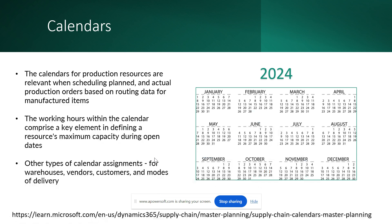In Microsoft Dynamics 365, calendars for production resources are relevant when scheduling planned and actual production orders based on routing data for manufactured items. When you do a production order, the assigned resource — whether a person, machine, or tool — needs a working calendar to determine availability. In a year you may have holidays on Saturdays, Sundays, or festival days during which production is not running, and in those cases you need to assign appropriate calendars to your production capacity.